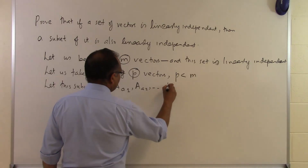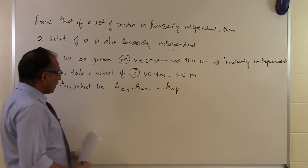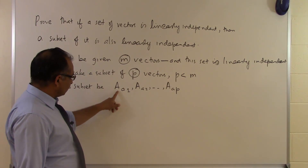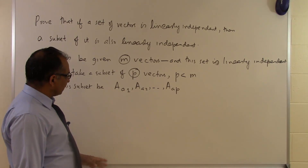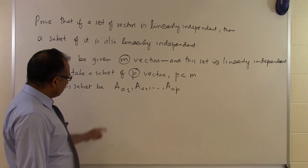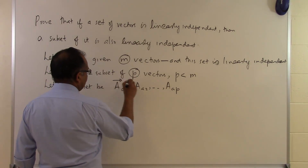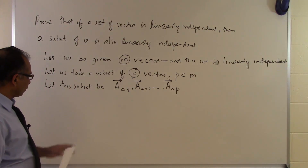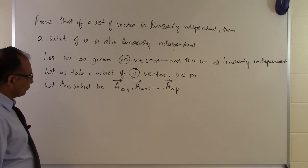I'm going to call the p chosen vectors a1, a2, through ap, because these are not necessarily the first p vectors — I'm taking some p vectors out of the m given vectors and just giving them different names: a1, a2, a3, and so on. These are the p vectors chosen as a subset of the m vectors.